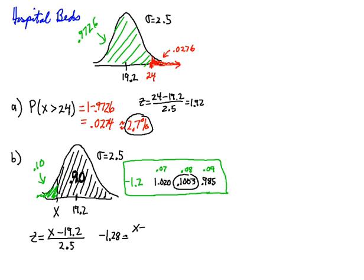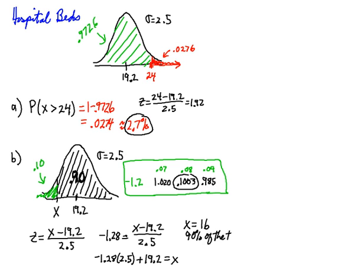So Z = -1.28 equals X minus 19.2 divided by 2.5. I multiply both sides by 2.5 — it cancels on the right — and then add 19.2. Solving the equation for X, X turns out to be 16. So 90% of the time, at least 16 beds will be needed.